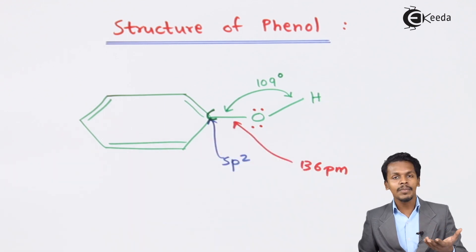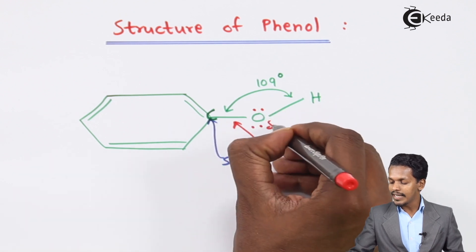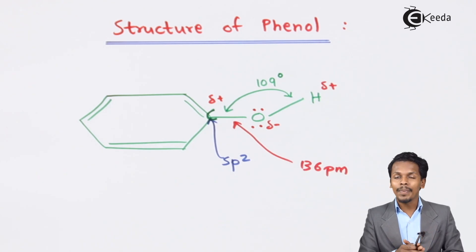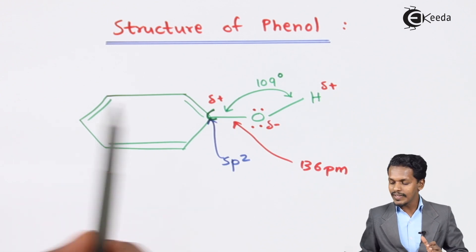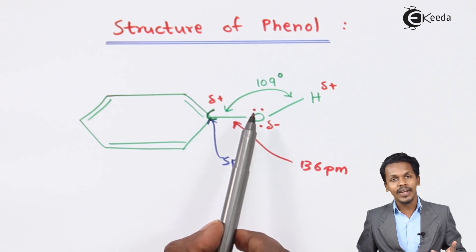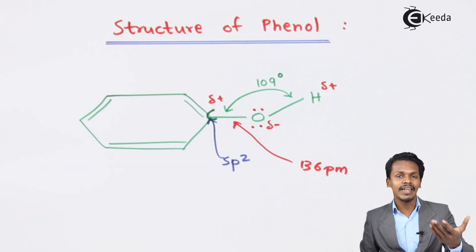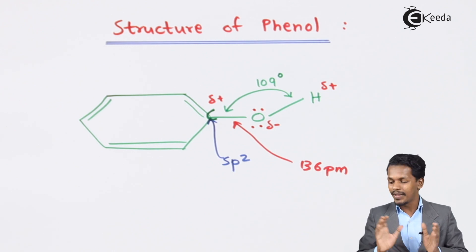Now let me talk about polarity. The oxygen atom is more electronegative compared to carbon or hydrogen. So the oxygen atom has a partially negative charge while the carbon and hydrogen atoms have a partially positive charge. In alcohols, the oxygen-hydrogen bond is very polar. But in phenol, the oxygen's lone pairs are involved in the delocalization of electrons, and that is why the polarity of the O-H bond in phenol decreases. The polarity of phenol is therefore less than the polarity of alcohol. This covers the structure of phenol and some physical properties based on its structure.